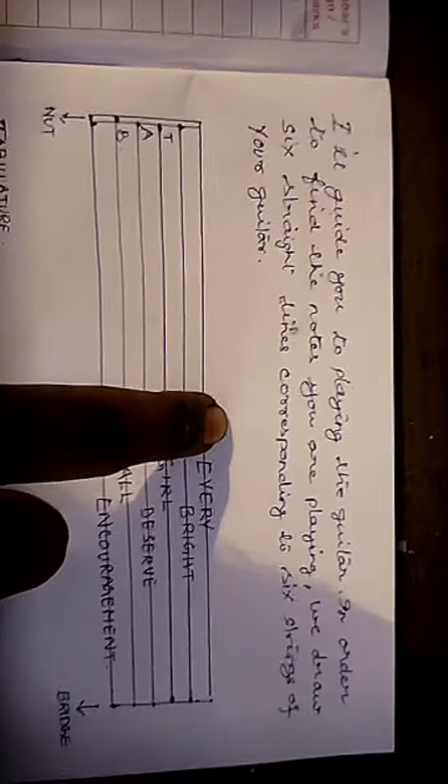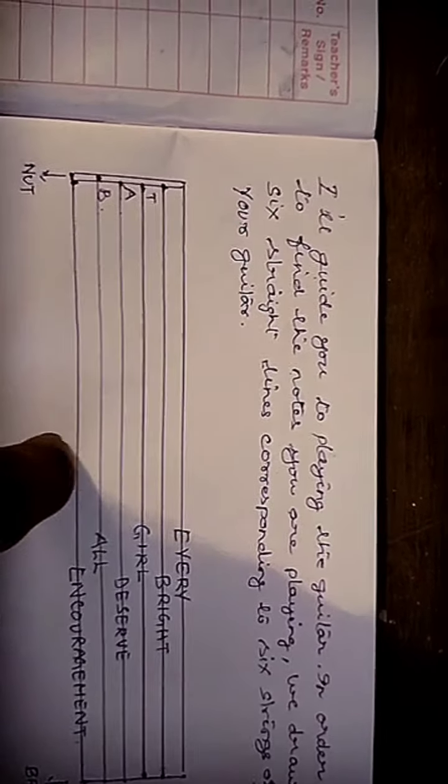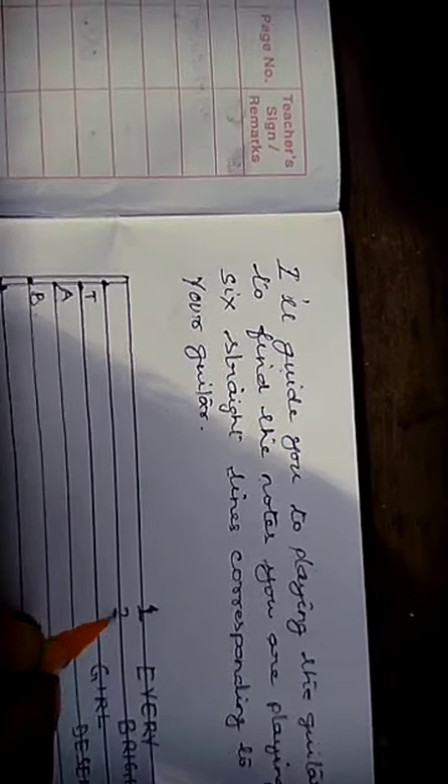The line right at the top becomes the first string of your guitar, then second, three, four, five, and six. So I will mark one, two, three, four, five, six. And when this is done, we write TAB right there to understand that it is a tablature for the guitar.